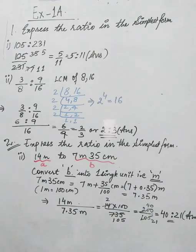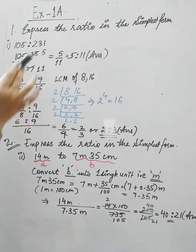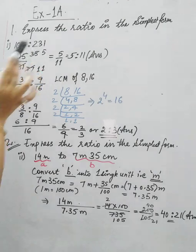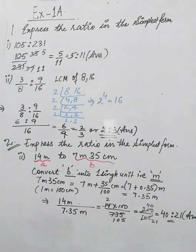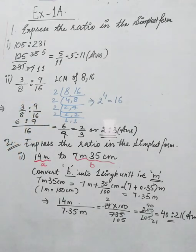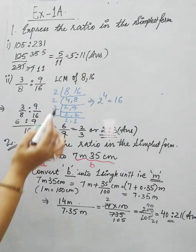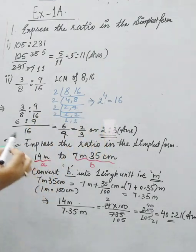Now let us start with Exercise 1a. Question 1 says to express the following ratios in simplest form. For the first part, 105 upon 231 reduces to 5 upon 11, or 5:11. For the second part, 3/8 is to 9/16 — we take the LCM of the denominators 8 and 16, which gives us 16.